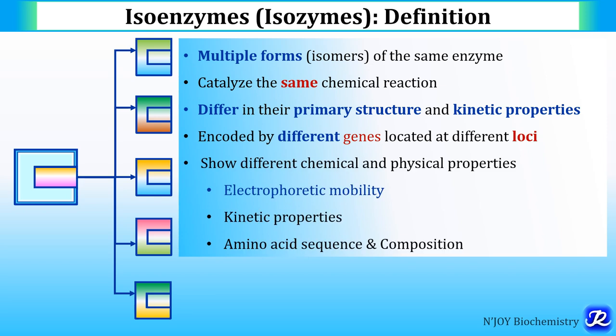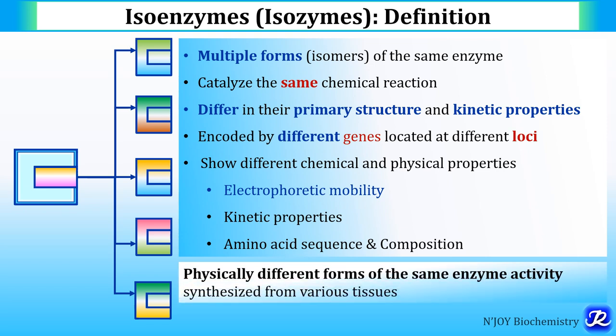These isoenzymes show different chemical and physical properties like electrophoretic mobility, kinetic properties, and they also have different amino acid sequence and composition. The isoenzymes are physically different forms of the same enzyme, catalyzing the same chemical reactions, and they are synthesized from various tissues. It is to be noted that not all enzymes have isoenzymes.